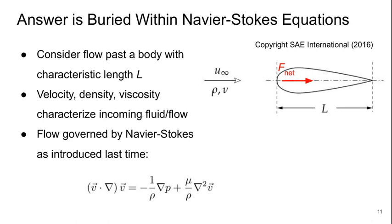Luckily for us, the answer is buried within the Navier-Stokes equations. Here I've just got some generic looking object. Let's consider the flow past this body which has a characteristic length L. The velocity, density, and viscosity characterize the incoming flow and fluid. The flow here is governed by the Navier-Stokes equation that we introduced last time: conservation of mass plus the momentum equation as shown here.